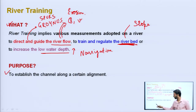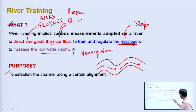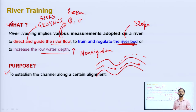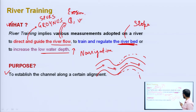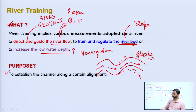The purpose of river training is to establish the channel along a certain alignment. Rivers constantly change their course — as seen in Bihar, where rivers frequently shift, causing the banks to flood and leading to destruction. When the river changes its course, the problem of flooding occurs. That is why river training needs to be done.